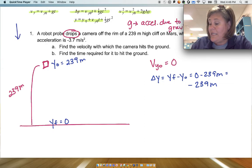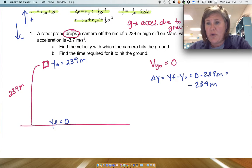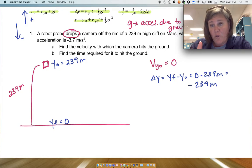I'm going to say that down is negative, up is positive. So that -239 meters just means that the camera drops 239 meters down from where it started.